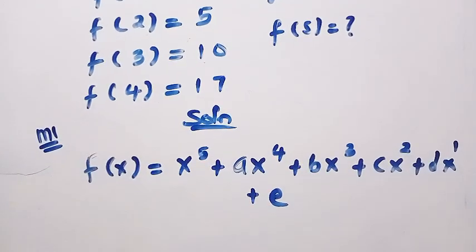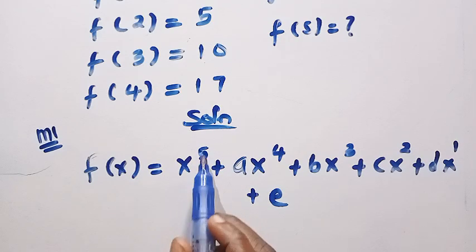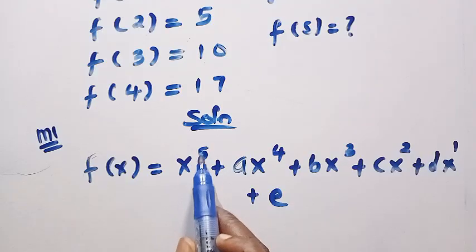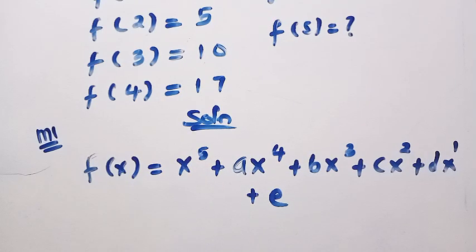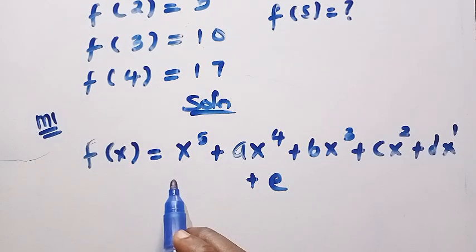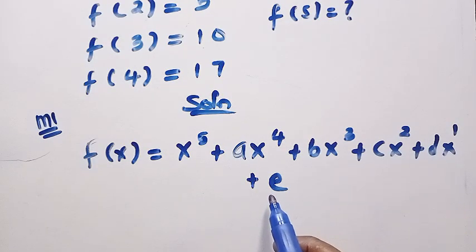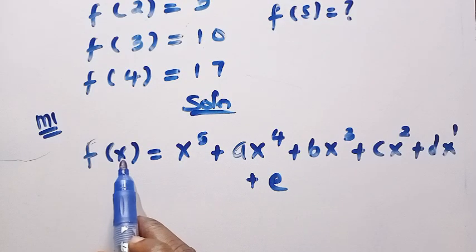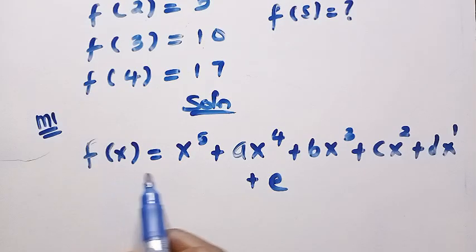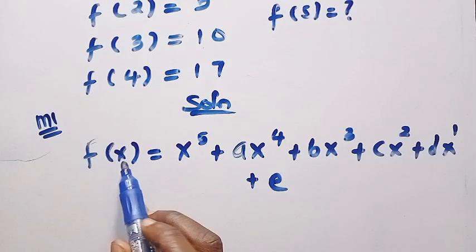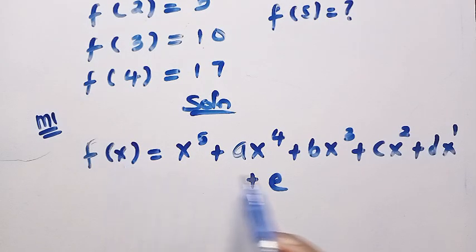When we look at this standard coefficient method of degree 5, if this question says degree of 6, we will start with 6 and proceed. What we are expected to get here is the values of a, b, c, d, and e before we can plug in the value of 5. But before then, we have to keep substituting the value of x from x equals 1 down to x equals 4.